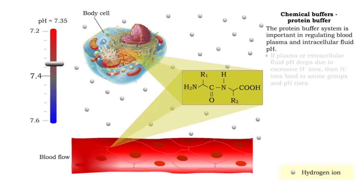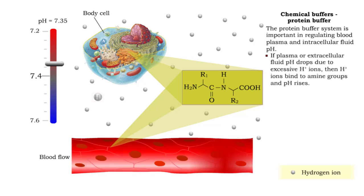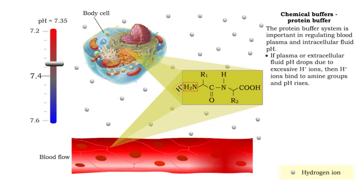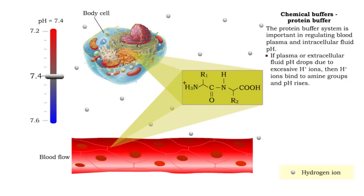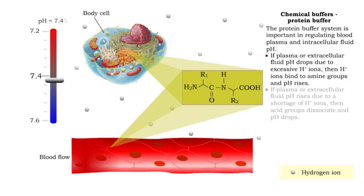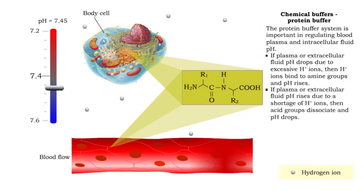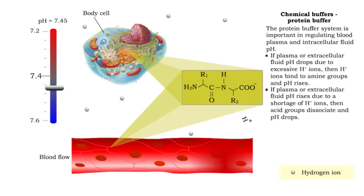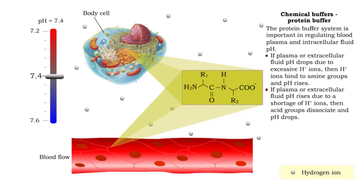If plasma or extracellular fluid pH drops due to excessive hydrogen ions, then hydrogen ions bind to amine groups and pH rises. If plasma or extracellular fluid pH rises due to a shortage of hydrogen ions, then acid groups dissociate and pH drops.